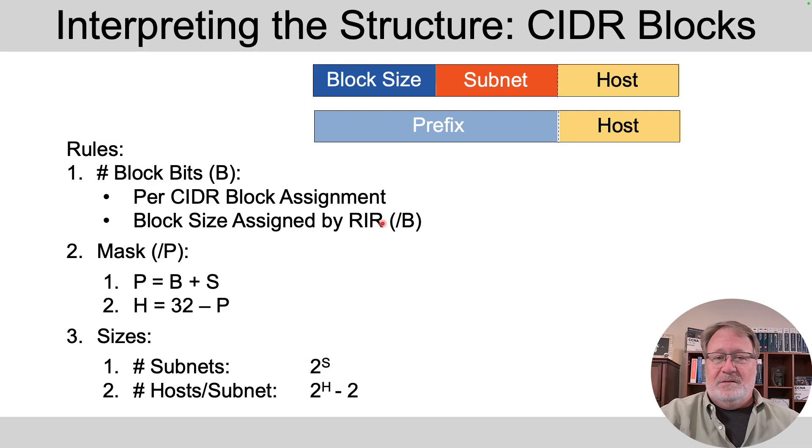The prefix that you use to subnet with, then, will be a larger number than the number given to you in that block. So if you were given a slash 18, maybe your subnet mask is a slash 25.